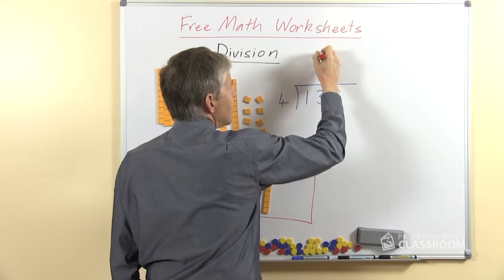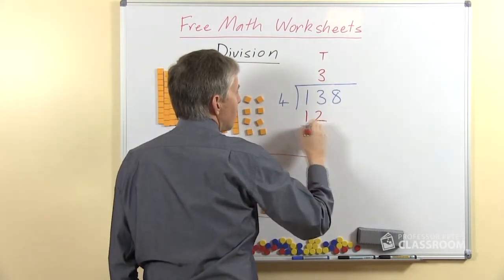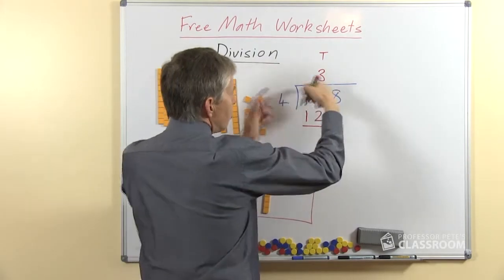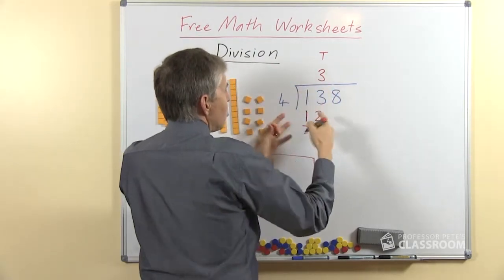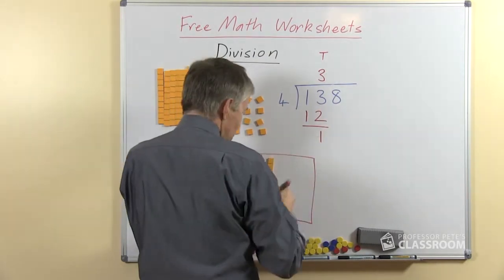So we're going to put the 3 here. This is in tens. 3 fours are 12. This is where we do the multiplying, so we reverse the division if you like and say, well if we take away the 12, how many are left? There's 1 left.